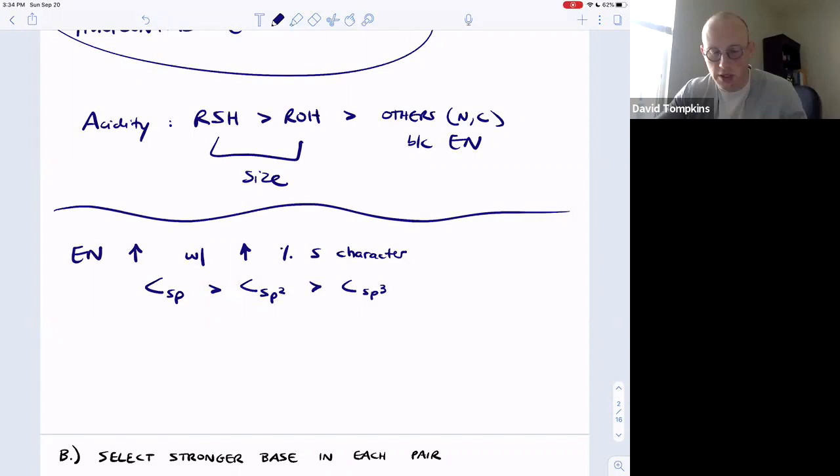So this is electronegativity of those second row atoms when we're just comparing atoms of the same size. And recall that fluorine is pretty much always more electronegative than oxygen, which is typically going to beat carbon and nitrogen. But what happens next is strange. So when nitrogen is sp3 and carbon is sp, that 50% s character carbon is actually more electronegative than sp3 nitrogen.